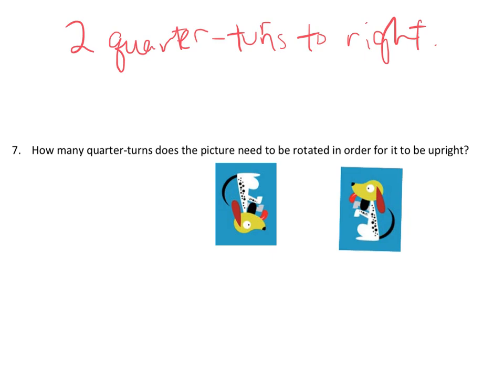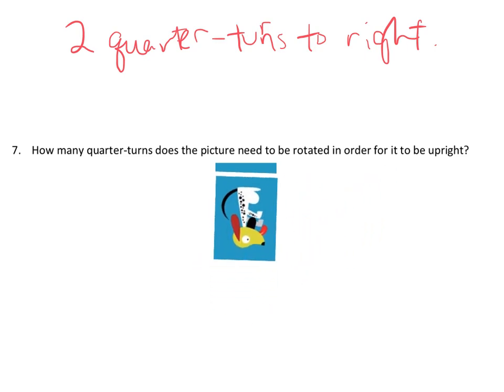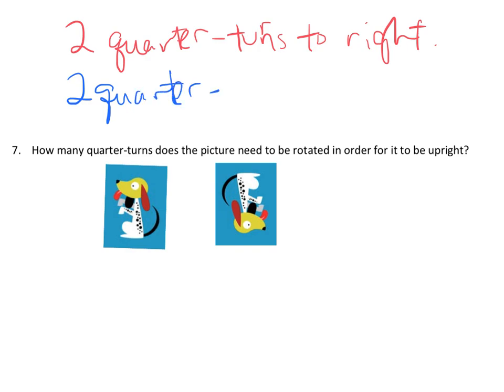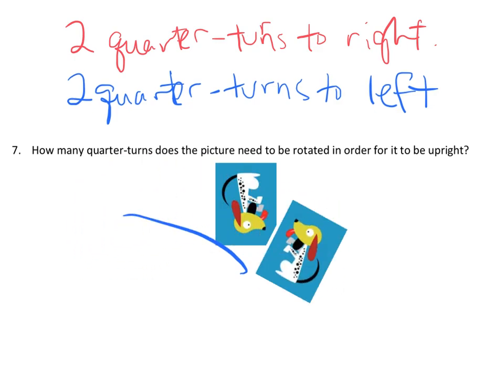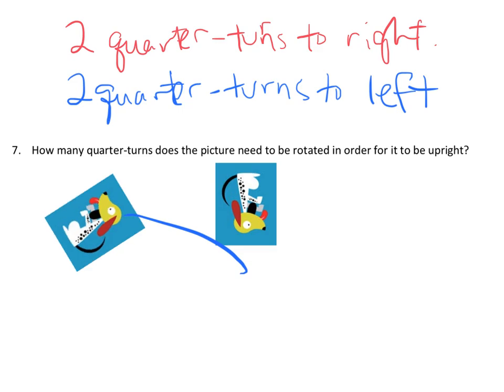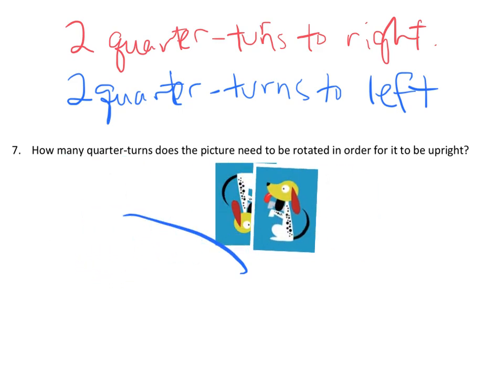But the question might be, well, what happens if we turn to the left? What would happen? So let's reset. And let's get that going again. Let's see what happens if we turn to the left. So here's our upside down little doggy. And let's do quarter turn to the left. One. And another quarter turn to the left. Two. So it turns out two quarter turns to the left will also do it. Two quarter turns to the left. So it doesn't matter if you choose to turn to the right or turn to the left, to get our dog to go right side up, it's going to require two quarter turns. You're either going to go two quarter turns to the right or you're going to do two quarter turns to the left. And either way, you're going to get a straight up dog.